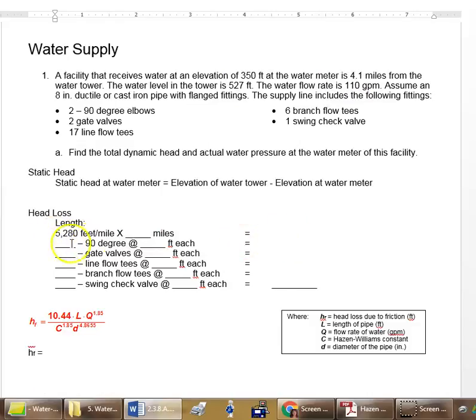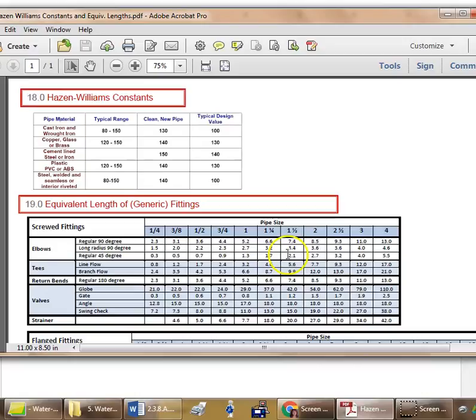Then we need to calculate each one of these because we lose extra length when we have an elbow or one of these other parts. If I have a 90 degree elbow and I have an 8 inch ductile pipe, I need to look it up on my table. Here's the table I gave you and I'm looking for an 8 inch pipe.